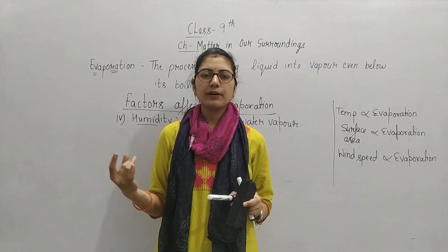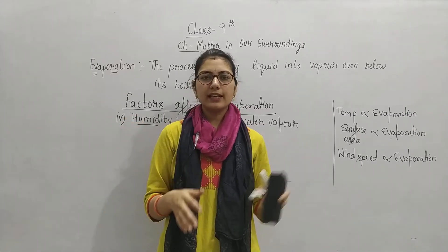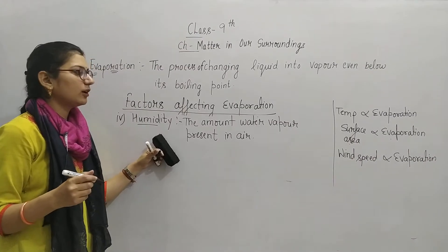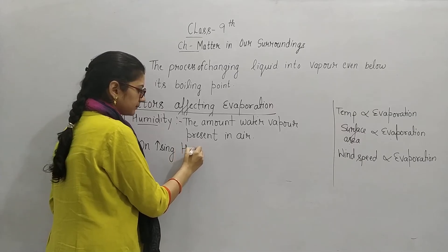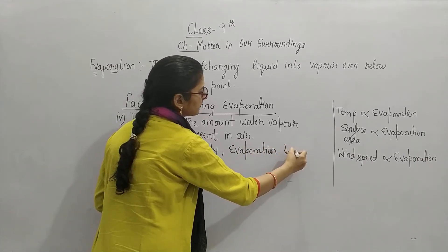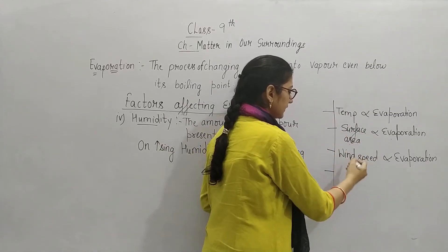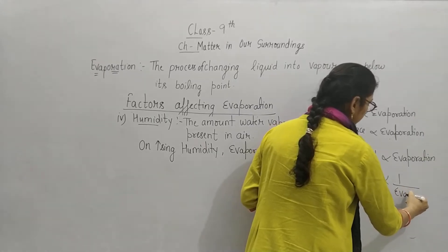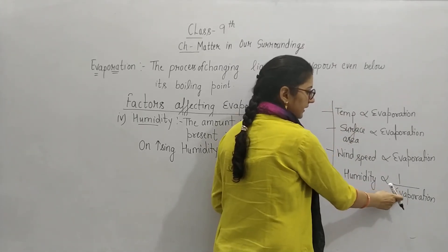Rainy season में पहले से ही water vapor present है, और आपने अपने कपड़े dry करने के लिए डाल दिए हैं — तो क्या होगा? वो speed increase करेगी कि decrease? Sunlight से पहले जो water vapor present है उनका evaporation होगा, फिर आपके clothes का होगा. तो humidity होने से आपका evaporation process slow down हो जाएगा. On increasing humidity, evaporation process decreases. Humidity inversely proportional है — humidity increase करेगी तो evaporation decrease करेगा, अगर humidity decrease करेगी तो evaporation increase करेगा.